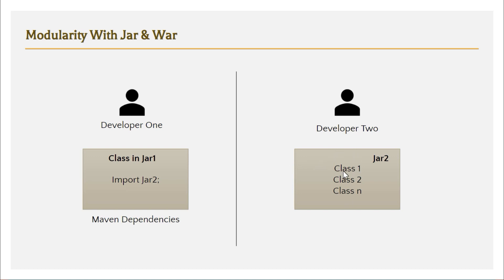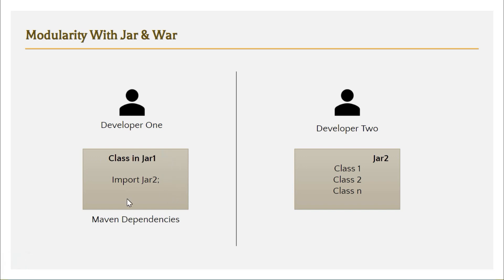There is no restriction on which class can be accessed and which cannot. Additionally, every time there is a change in the classes of that JAR, Developer 1 has to re-import the JAR and may need to change his own code if function names have changed — breaking his dependencies and requiring him to fix everything again. These are the problems with the traditional JAR concept.